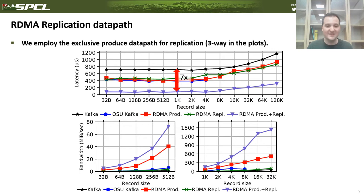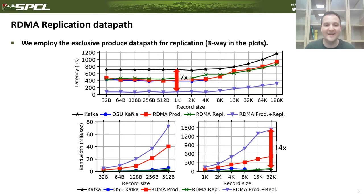A similar effect was observed in the bandwidth experiment. The RDMA produce data path was more important there, as TCP would clearly become a bottleneck. Overall, if you enable both RDMA data paths, we offer a 14x improvement in bandwidth.